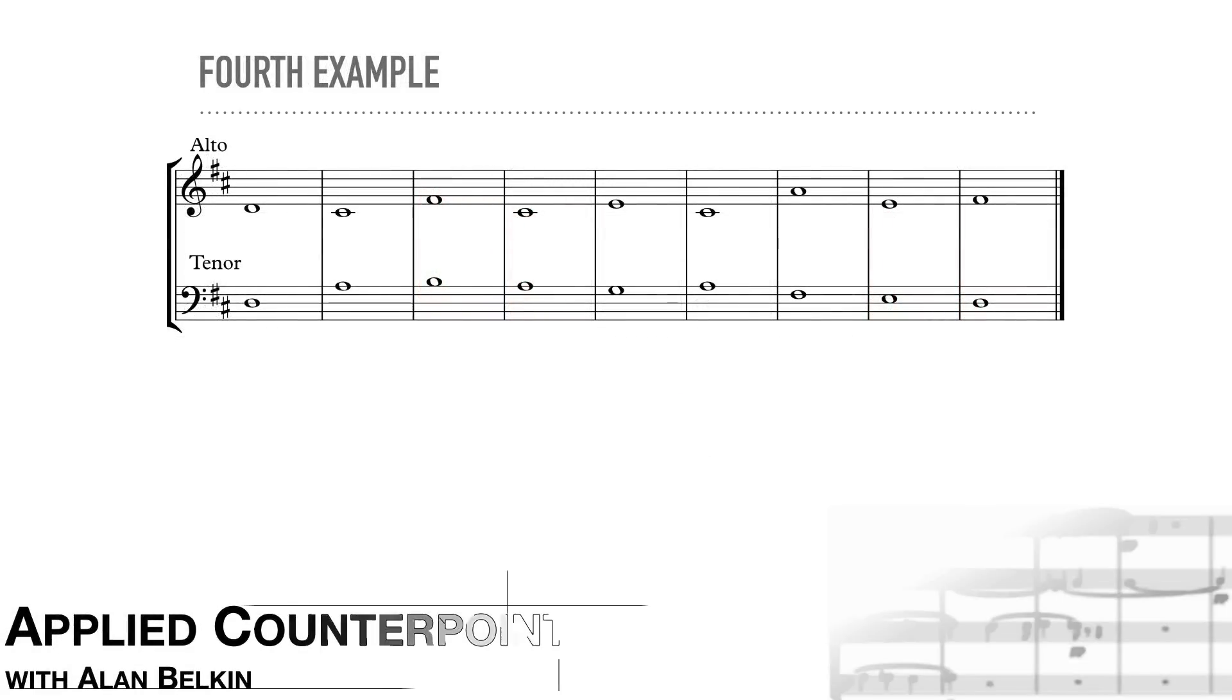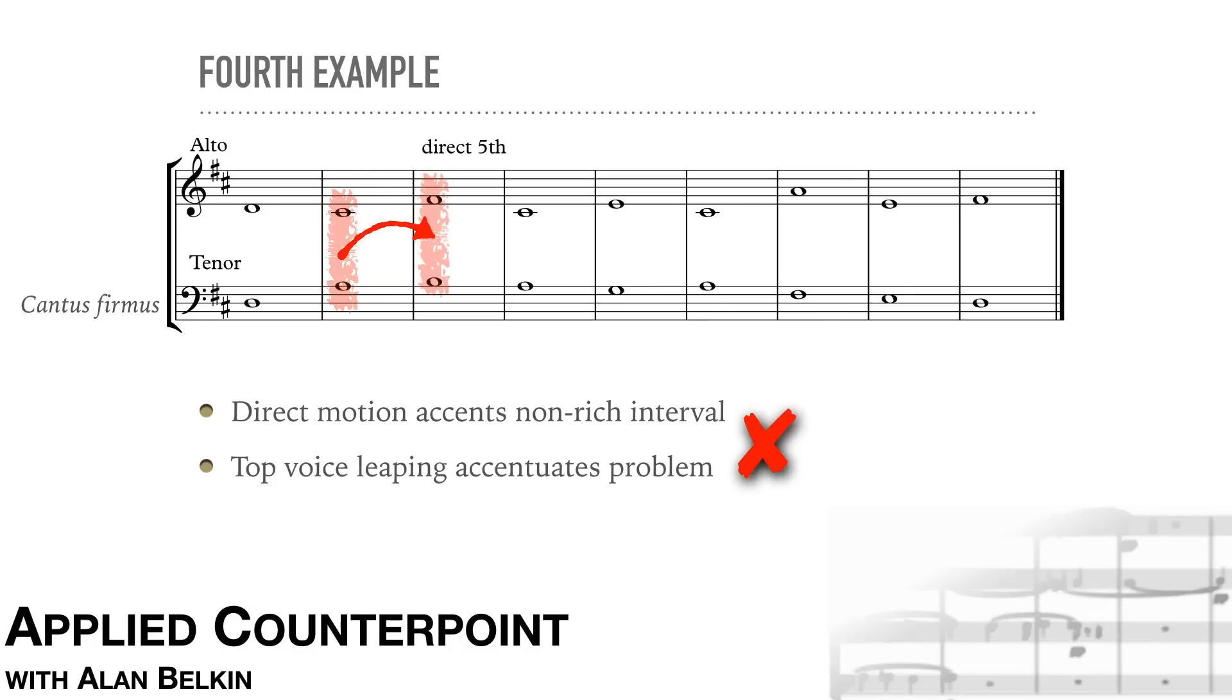Now an example with somewhat more subtle problems. Here in the third bar, both voices move up into a fifth, and the top voice has a leap. This has the effect of accenting the fifth. The problem is that a fifth is not very rich, and here it's a bare moment in an otherwise rich texture. The same thing happens in the bar before the end, with both voices moving in the same direction into an octave, again with the top voice leaping. As before, the result is disappointing, bare instead of rich. These are called respectively direct fifths and direct octaves, and they should be avoided in two parts.